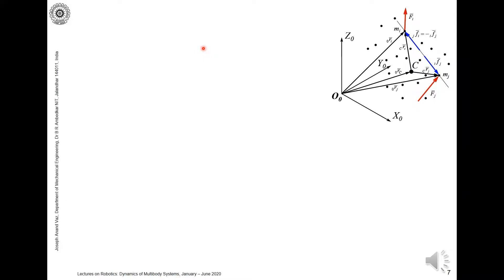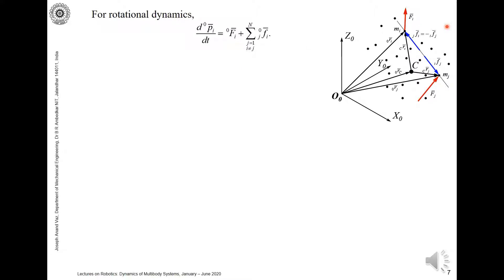In this part we will discuss the rotational dynamics for a system of particles. We begin with the fundamentals: the rate of change of momentum is caused by the resultant force acting on the i-th particle plus the summation of all internal forces due to the other particles acting on the i-th particle. This equation is for the i-th particle, and in rotational dynamics we have to consider moments.